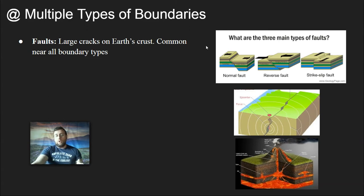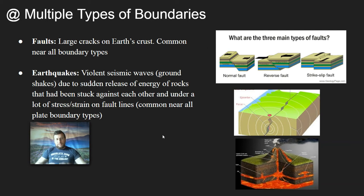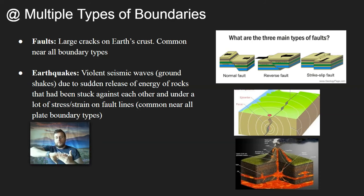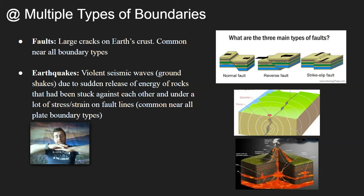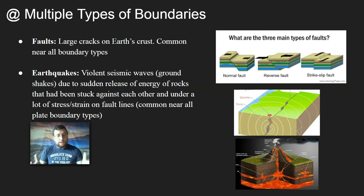Wherever you have faults, you're also going to get earthquakes. Earthquakes are violent releases of energy causing seismic waves, which are ground shakes. That happens because rocks stuck against each other along fault lines get deformed. Like an elastic band, there's only so much deformation they can take — eventually they crack or slip, releasing energy in a violent instant as a shock wave. It all happens because rocks are under strain along fault lines, so you're going to get earthquakes at any kind of plate boundary.